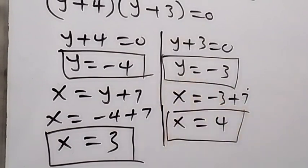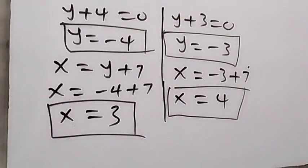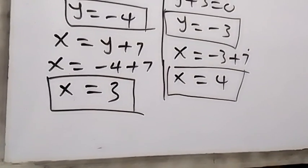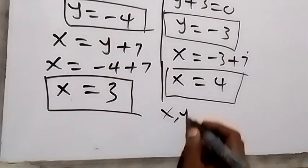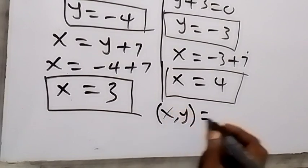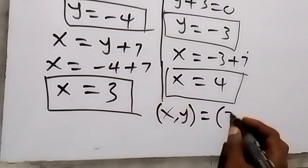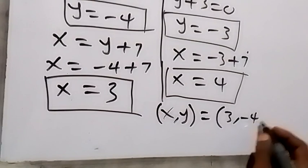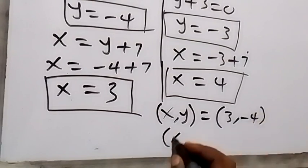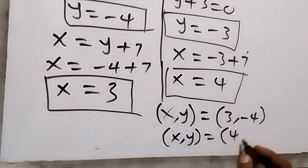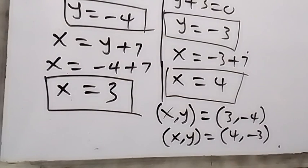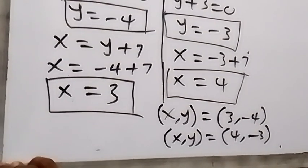These are the two sets of solutions we have. When we write it out properly, we have x comma y. For the first solution we have 3 comma minus 4, and the second set of solutions we have x comma y equals 4 comma minus 3. You can check and put these values into the equation to confirm that it satisfies the equation.